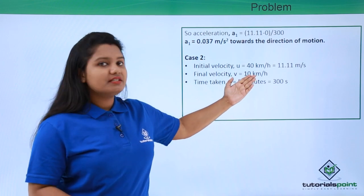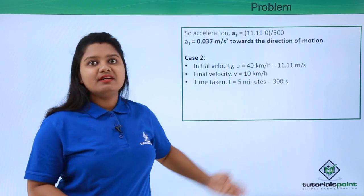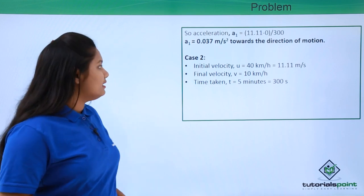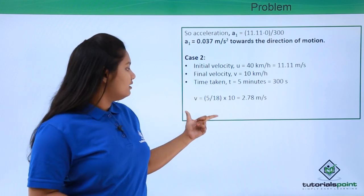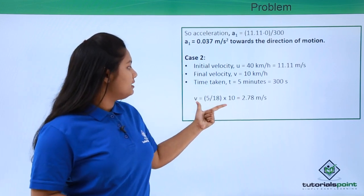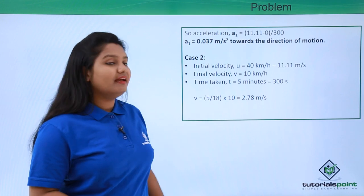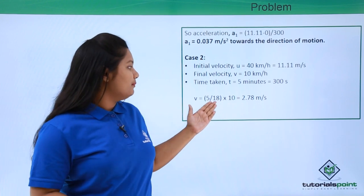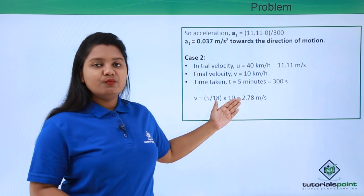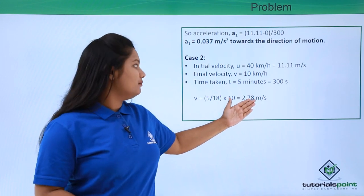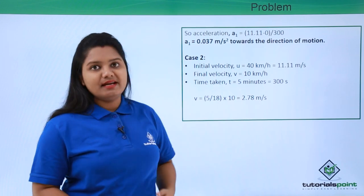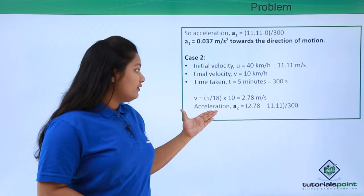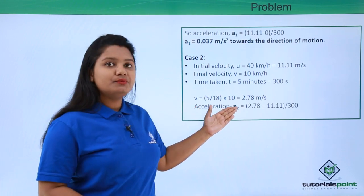We need to convert 10 kilometers per hour to SI units. Multiplying by 5/18, the velocity becomes 10 multiplied by 5/18, which equals approximately 2.78 meters per second.